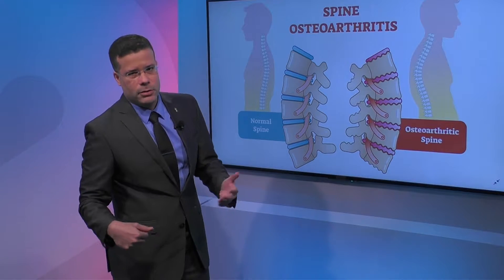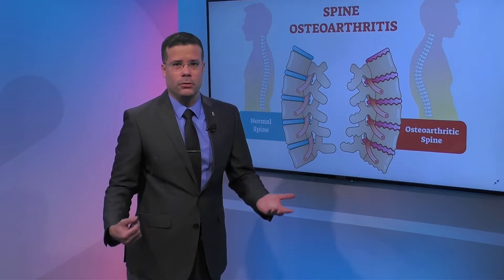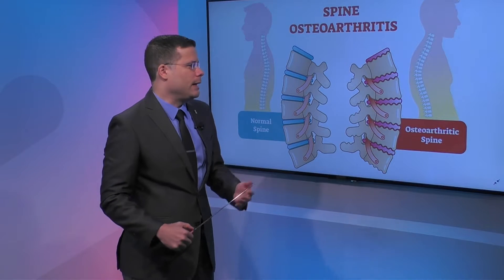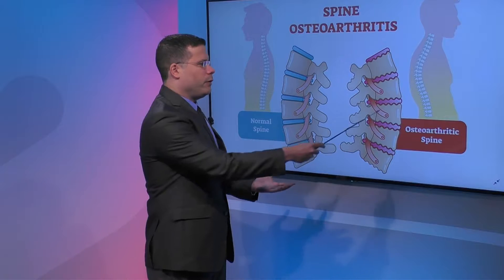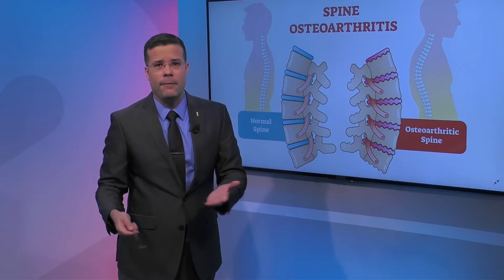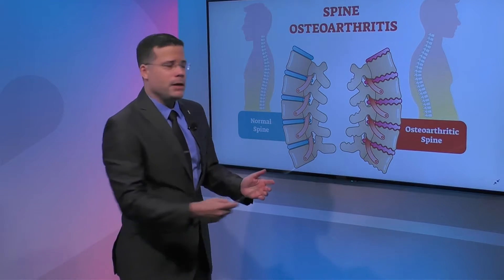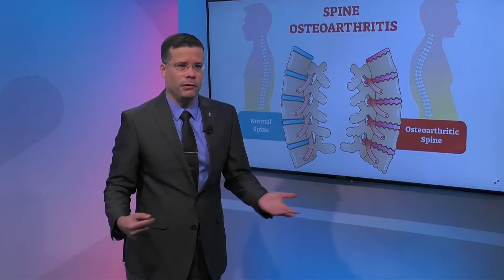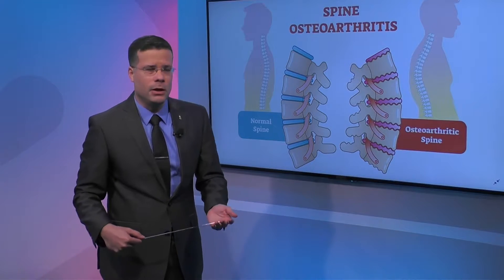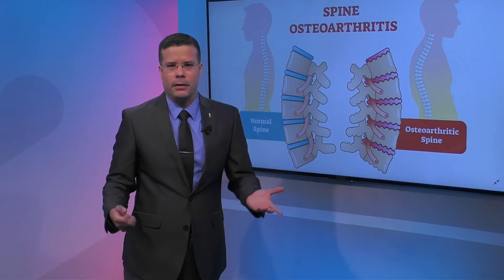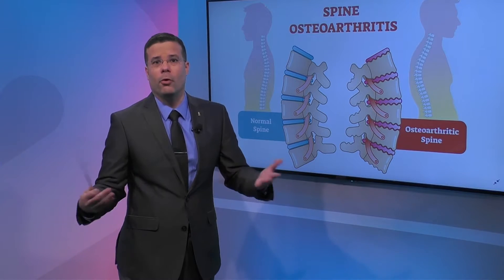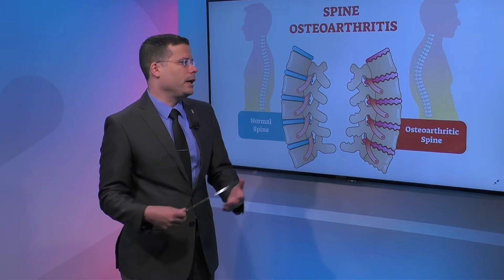Normally, what happens as we age is the discs start losing some of their water content, they start losing some of their tensile strength, they become weaker. And when they become weaker, some of the stress — keeping in mind they bear about 80% of the load of the spine — the rest is transferred to those joints called the facet joints. Those joints then become arthritic because instead of bearing about 20% of the spine load, they're now bearing more.